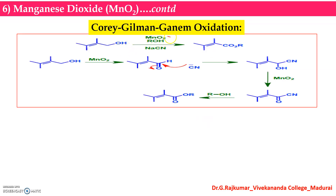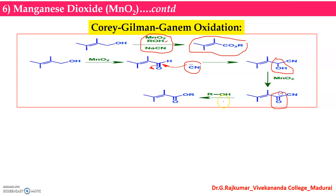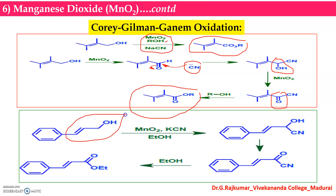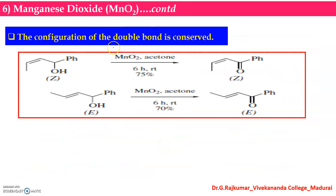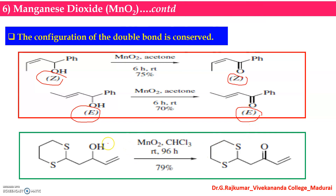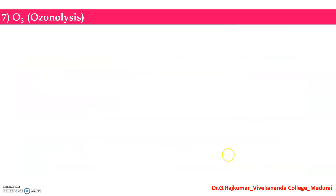When you see manganese dioxide with a cyanide source (potassium cyanide or sodium cyanide) and an alcohol, you get the corresponding ester as the product. The first step is nucleophilic addition of the cyanide ion, followed by oxidation of the hydroxyl group into a ketone, and in the presence of alcohol you get an ester. Allylic hydroxyl groups can be oxidized to give corresponding esters using MnO2, potassium cyanide, and ethanol. The configuration of the double bond is conserved — the E-isomer in the reactant gives the E-isomer in the product.